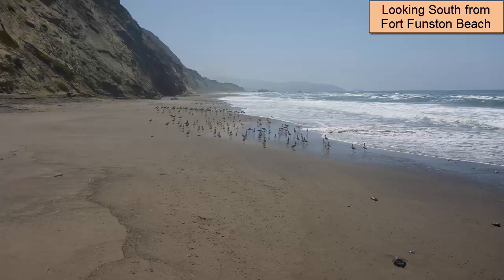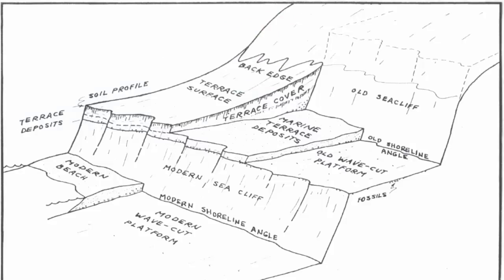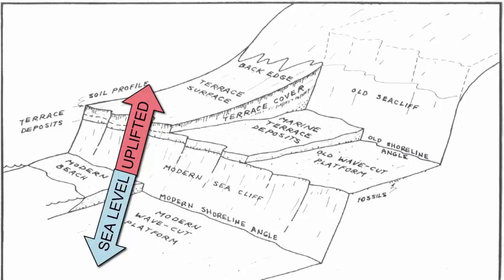Normally the wave-cut bench and platform is covered by sand, but in some instances, especially in winter when waves have removed much of the sand, it is exposed as bare rock. When the wave-cut bench or platform is uplifted, or when sea level drops, it can sit as a flat terrace above a new wave-cut bench. These older benches are called marine terraces.